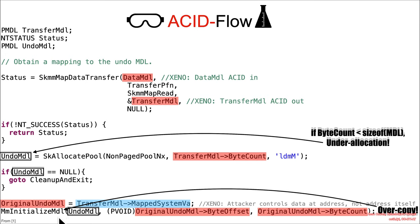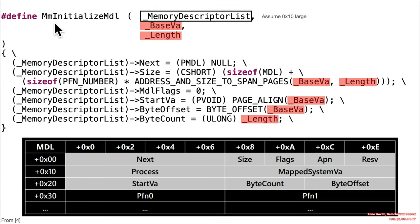That's going to ultimately be an over-copy because MM initialize MDL, as you saw in the source code, fills in a bunch of those structure fields inside the MDL, which is hex 30 big. But this memory allocation is only hex 10 big, if we assume that was hex 10. Therefore, this is going to do a whole bunch of writing that is ultimately going to exceed the bounds of this particular heap allocation. So ultimately, when MM initialize MDL is called with an under-allocated buffer of 10 bytes and attacker controlled base VA and attacker controlled length, any access past the first 10 bytes is going to be overflowing the heap.